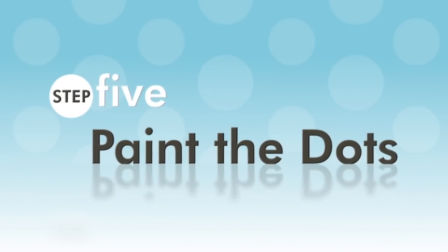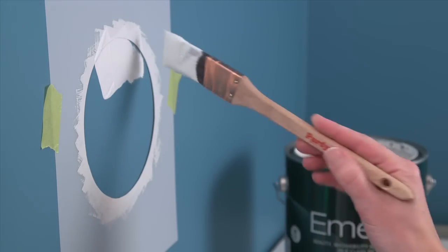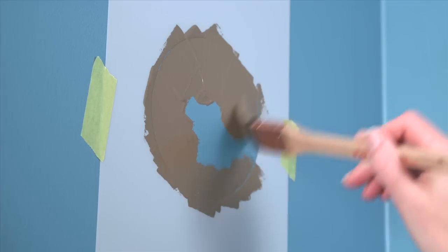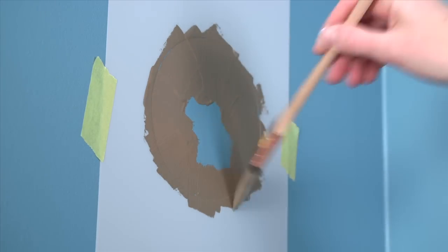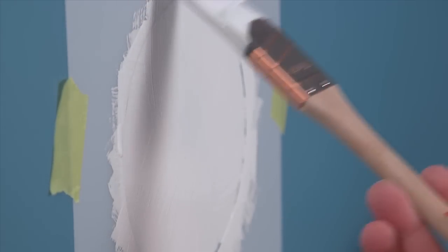The last step is to paint the dots. Using a small paintbrush, work from the outer edge of the circle towards the center to avoid paint seeping under the stencil. Then carefully remove the stencil. Do this for all the dots. You may need to apply a second coat depending on the look you want to achieve.